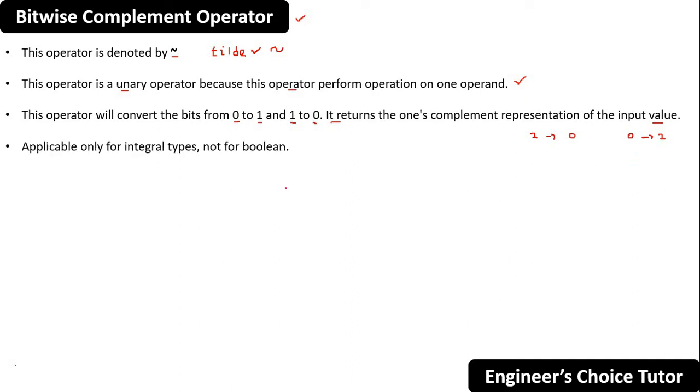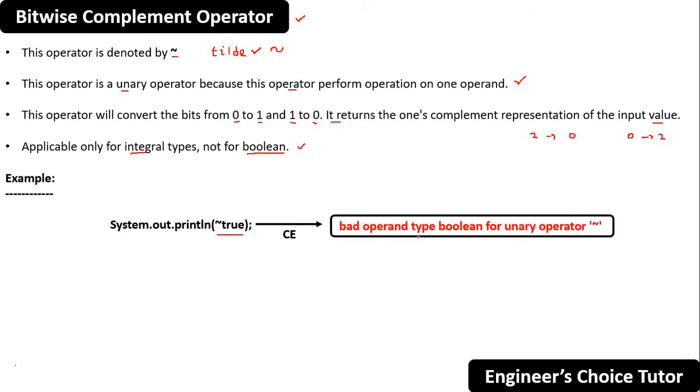This is applicable only for integral types, not for boolean. Remember this point. For example, if you are trying to apply this on boolean, you are trying to apply a bitwise complement operator on this true value. What will happen in this case? You will get a compile time error saying bad operand type boolean for unary operator. If you want to see this, let me show you.